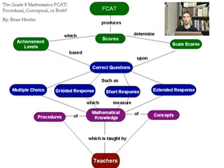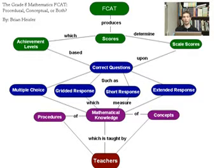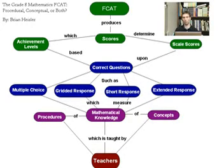I will first explain my concept map. The concept map begins with the FCAT. The FCAT is the Florida Comprehensive Analysis Test and is a test taken by all Florida public school students in grades 2 through 10. The FCAT produces scores which determine the scale score and the achievement level. The achievement level is based on a range from 1 to 5, with 1 being the lowest and 5 being the highest. The scale score is a numerical grade ranging from 0 to 3,000.